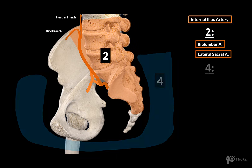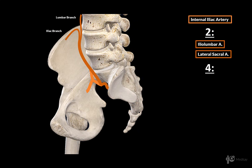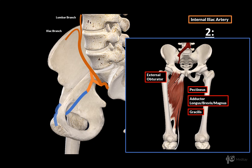Now let's cover the four arteries leaving the pelvic cavity entirely. The first one is the obturator artery, which runs forward and downwards along the lateral wall of the pelvis, and then goes through the obturator canal. Once it's on the thigh, it divides into an anterior branch and a posterior branch. These branches supply the muscles of the medial compartment of the thigh — the pectineus, gracilis, and the adductor longus, brevis, and magnus. It also has a side branch for the obturator externus muscle.